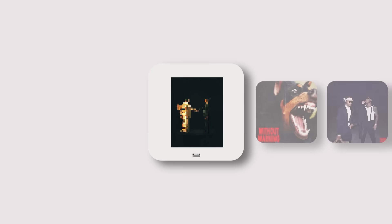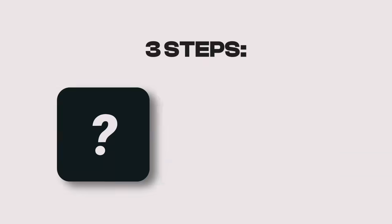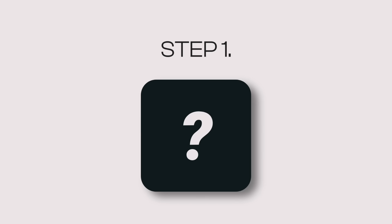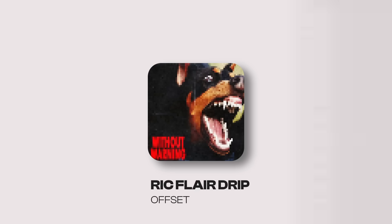To be able to consistently make melodies like this, you need to learn a three-step process. The first step can be easily found in a melody behind Ric Flair Drip by Offset.